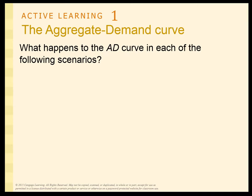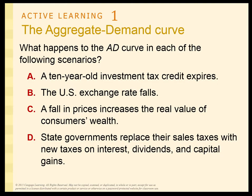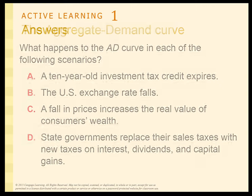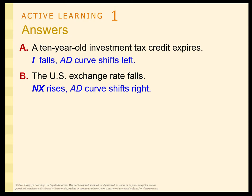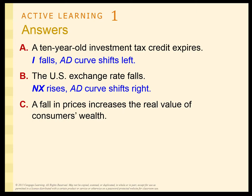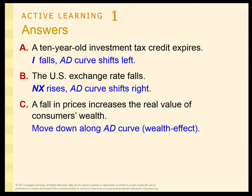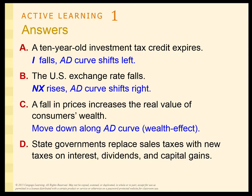Let's see what happens to the AD curve in four scenarios. If an investment tax credit expires, investment falls, so the AD curve shifts left. If the U.S. exchange rate falls, net exports rise because our exports get cheaper, so the AD curve shifts right. A fall in prices is just a movement along the AD curve — there's no shift. And if a state government cuts sales taxes, it becomes cheaper to buy things, consumption rises, and the AD curve shifts to the right.